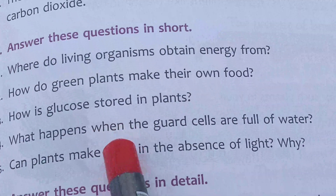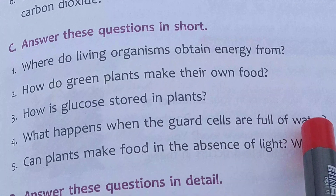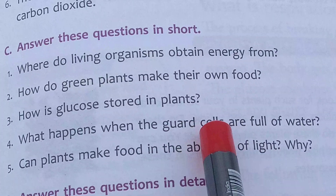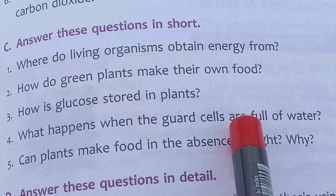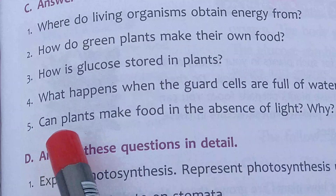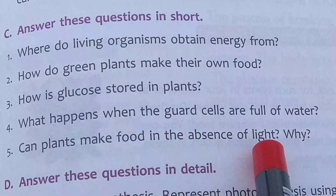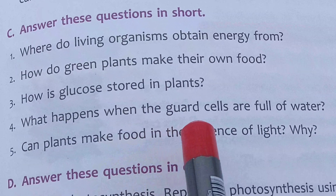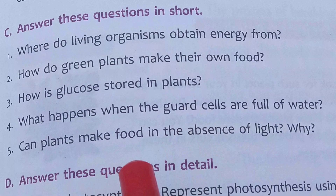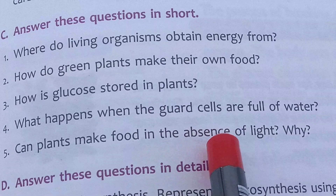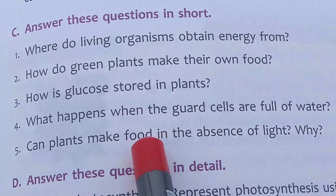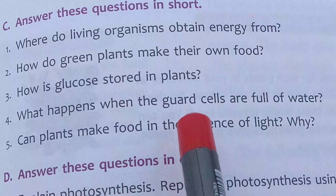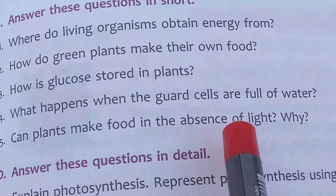What happens when the guard cells are full of water? After getting too much water, guard cells become swollen and bulge outward. That is why the stomata are opened. Can plants make food in the absence of light? It is not possible, because light energy is essential for the making of food. But in the presence of artificial light, plants can make their food, though the rate of photosynthesis decreases compared to natural light.